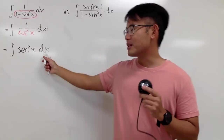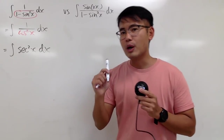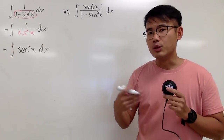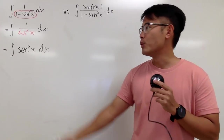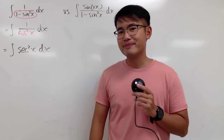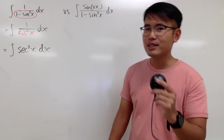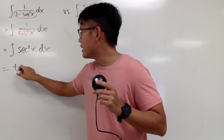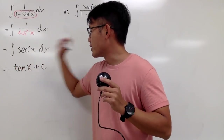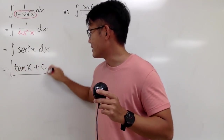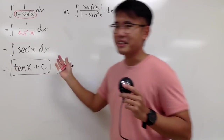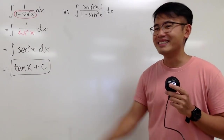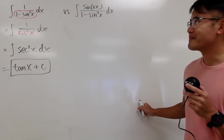And now this is just a matter of knowing our derivative table really well. The derivative of what gives us secant squared x? And the answer to that is tangent. So this is just tangent x, and we're done. That's it — no u-substitution required in this integral.